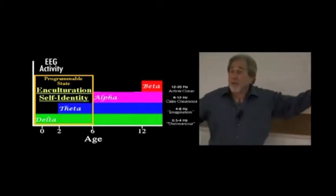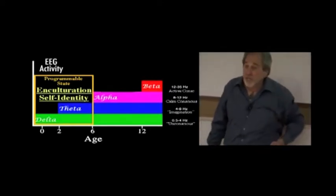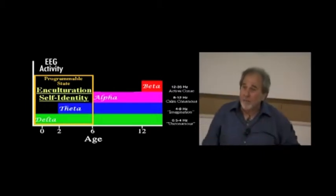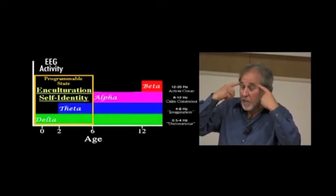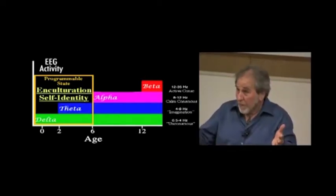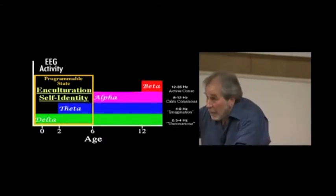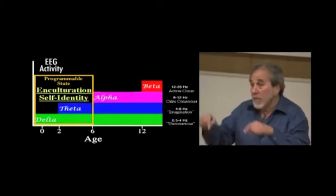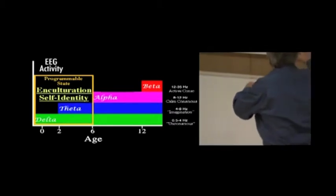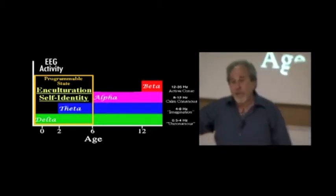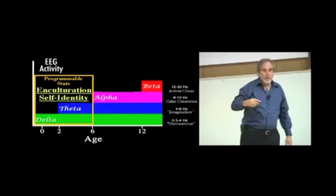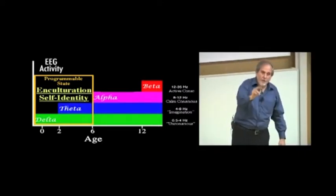The child is not in consciousness as we know it for the first six years of its life. And the answer is this: consciousness requires thinking. But if you have no database, what can you think about? Nothing. First you have to have data, then you can have thinking. The brain is designed for the first six years in low frequencies - the hypnagogic trance state.